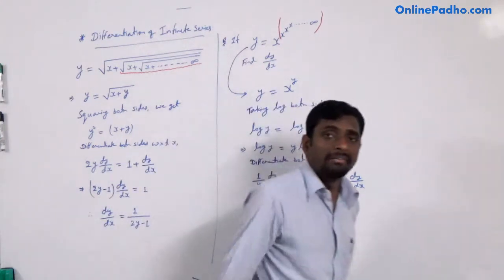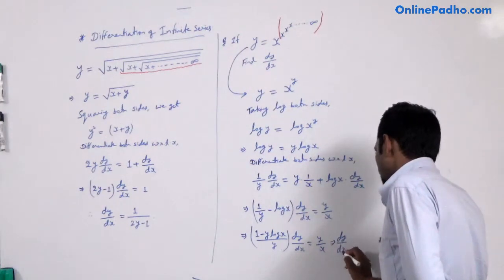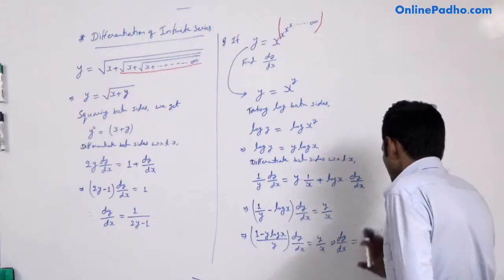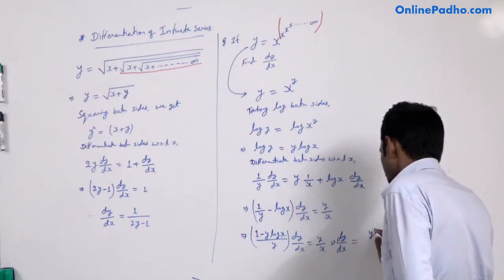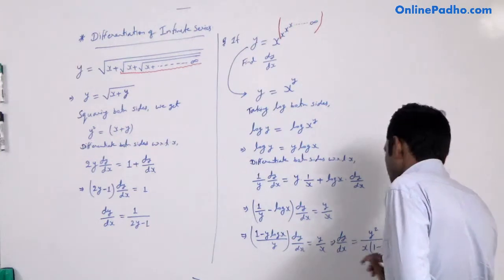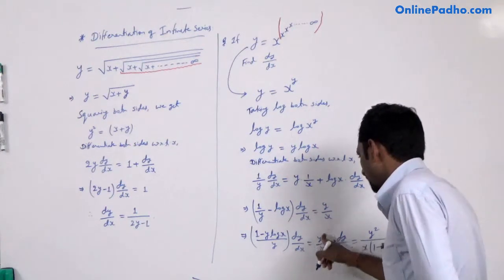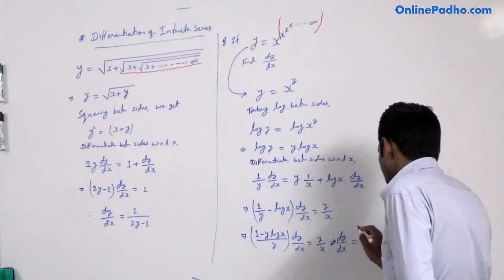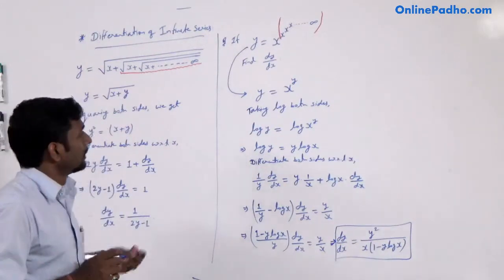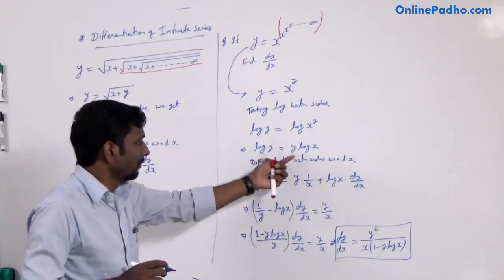Finally, we can write the value of dy/dx. Cross-multiplying, dy/dx equals y² divided by x multiplied by (1 − y·log x). This is the final answer — dy/dx equals y² / [x(1 − y·log x)]. This is the application of logarithmic differentiation followed by implicit differentiation.